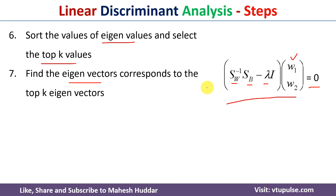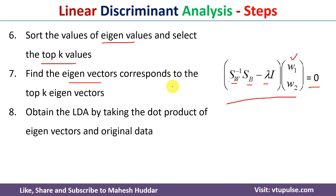Once you calculate W1 and W2 — that is, the eigenvectors — we take the dot product between the eigenvectors and the original data to get the linear discriminants. If k equals one, we get one linear discriminant; if k equals two, we get two linear discriminants, and so on. These are the steps to follow to get the linear discriminants in a supervised classification problem, converting higher dimensional data into lower dimensional space.